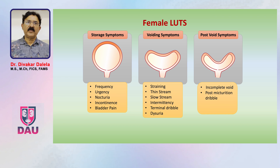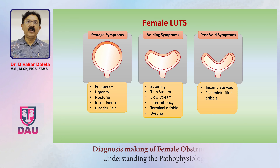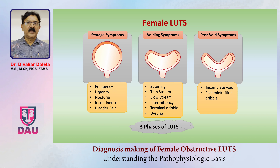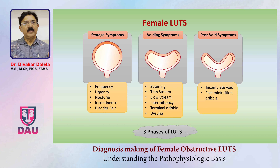There is a third set of symptoms called post-void symptoms. Some patients experience incomplete voiding and some patients notice post-micturational dribble. There are three phases of lower urinary tract symptoms. When you take a history and talk to the patient, learn to categorize her symptoms into these three blocks.